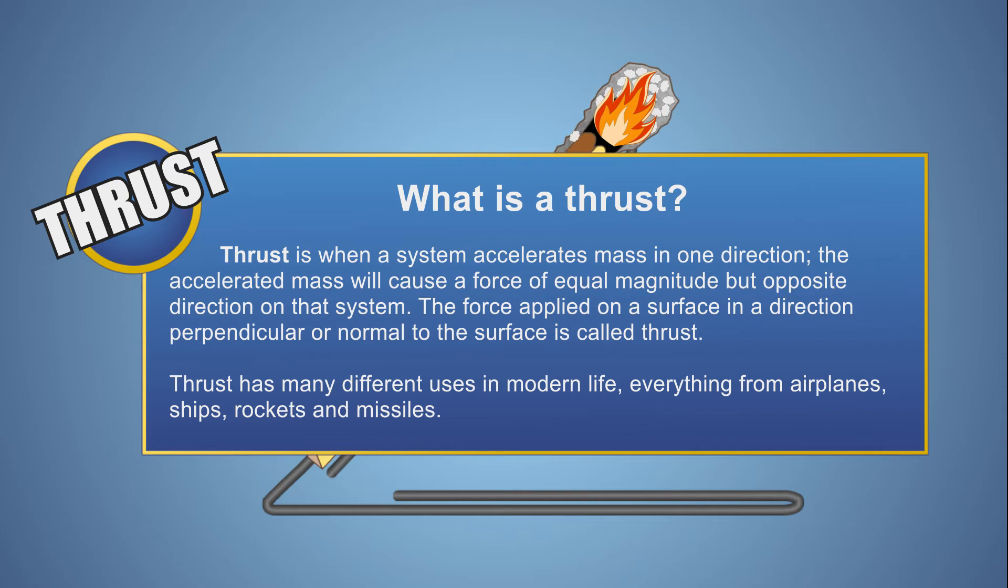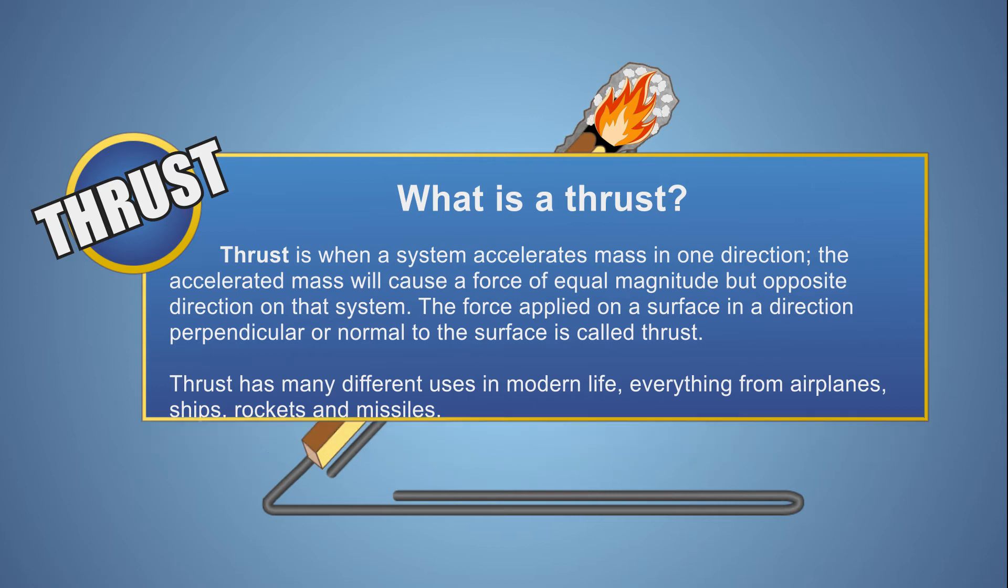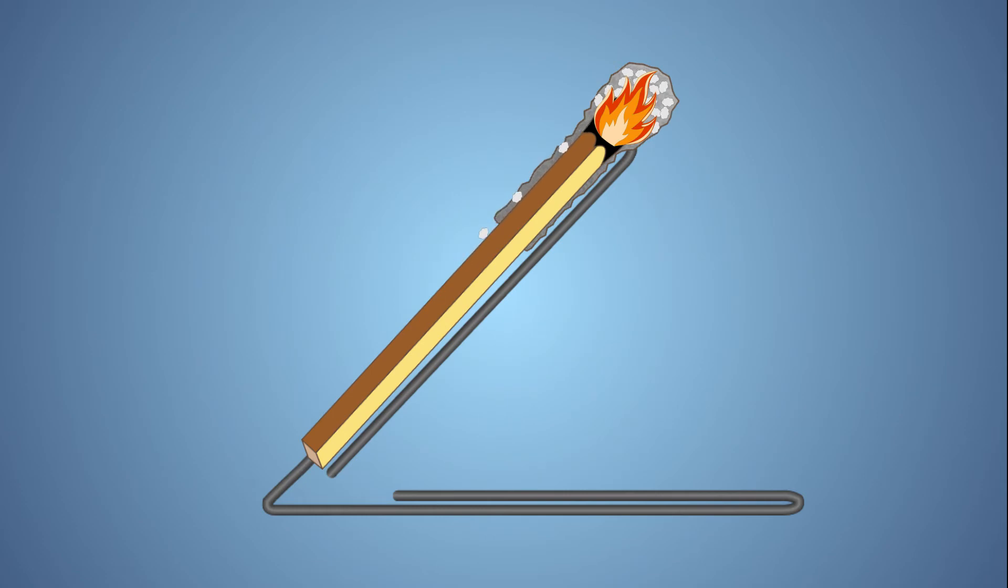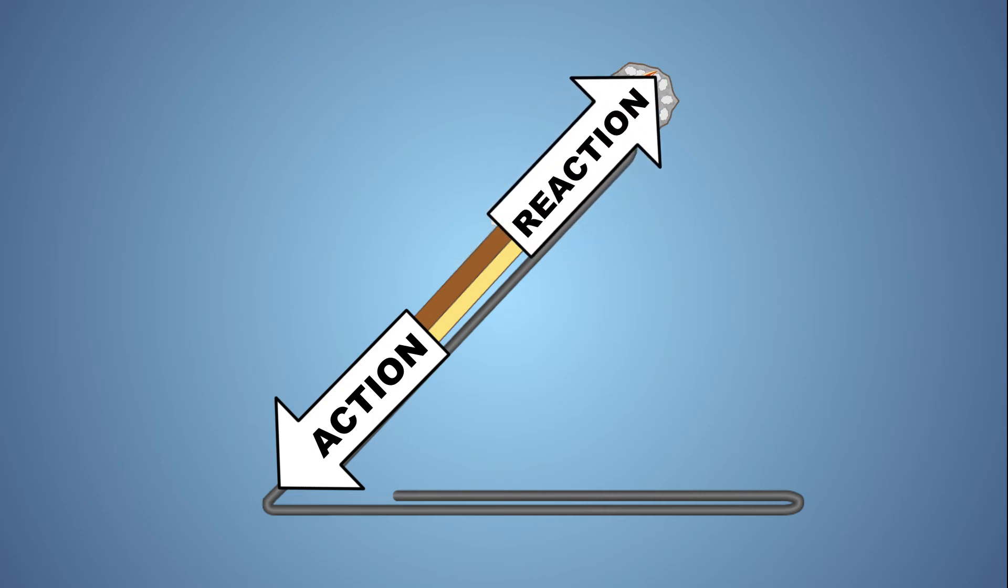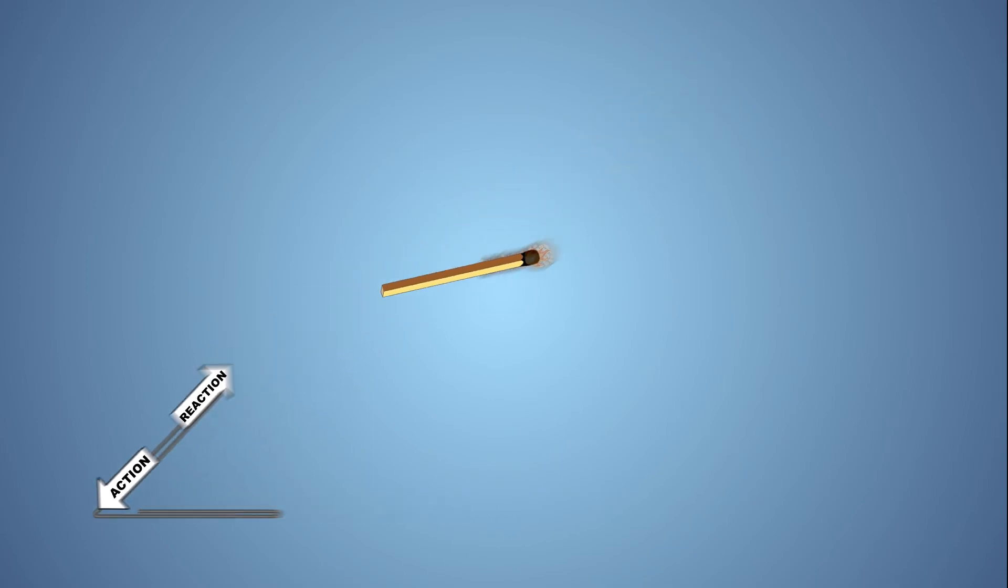What happens next in our experiment is a great example of Newton's third law of motion. His third law states that for every action, there is an equal and opposite reaction. The action in this experiment is created when we light our match and the pressurized smoke shoots out our exhaust port and pushes in a downward direction. The reaction in our experiment is the movement of the rocket in the opposite upward direction.